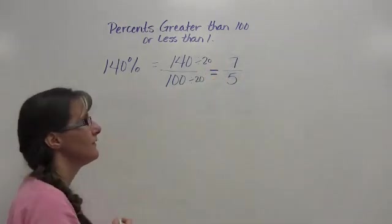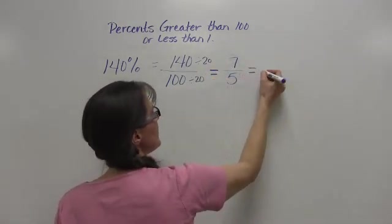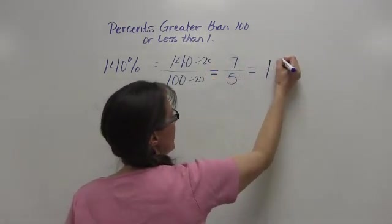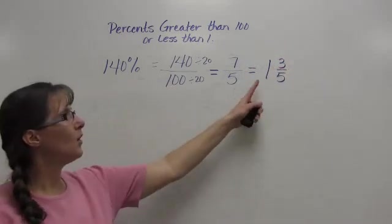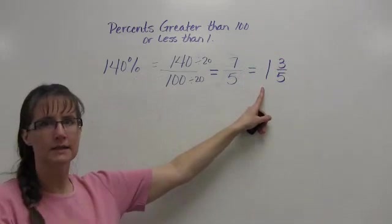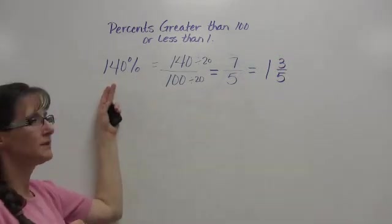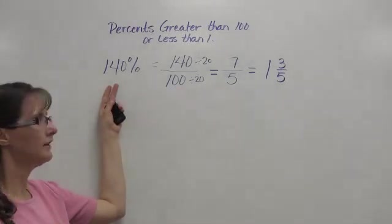So this is the same thing as seven-fifths, which is the same thing as one and three-fifths. You will always get a mixed number if your percent is greater than 100.